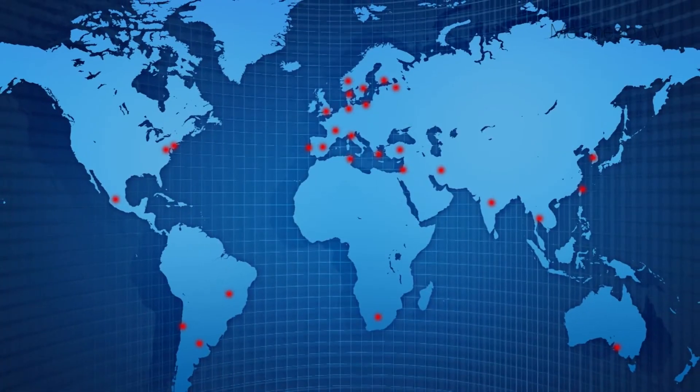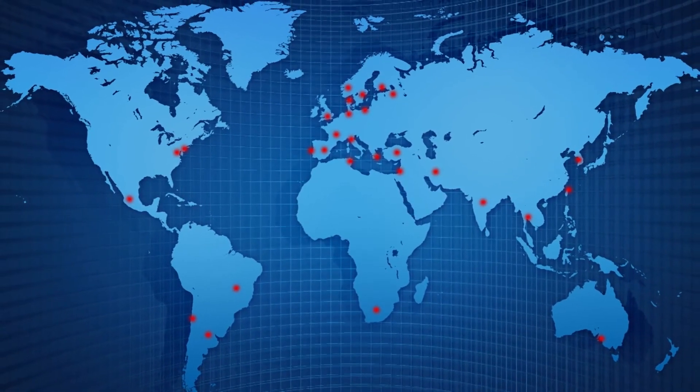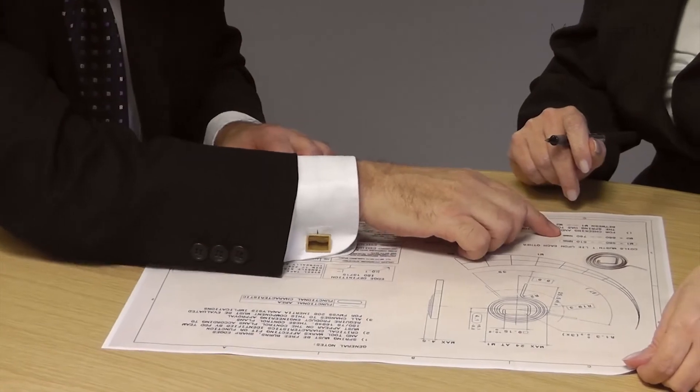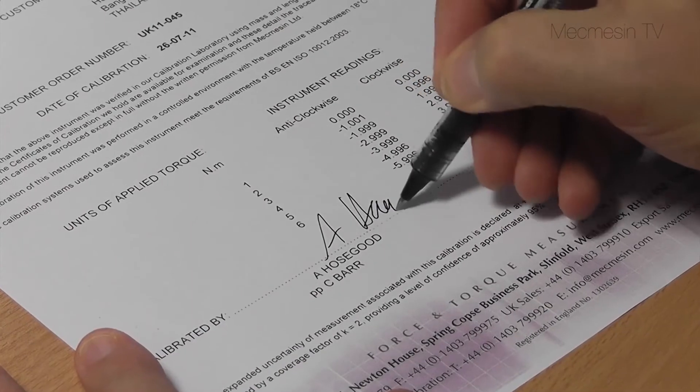With Mecmesin Group companies placed strategically around the world and with representation in 57 countries, you're never far from Mecmesin trained engineers for pre-sales applications advice as well as after-sales service and calibration.